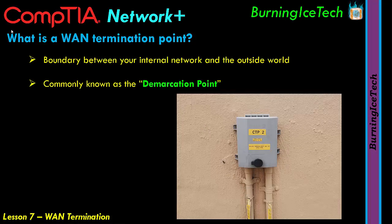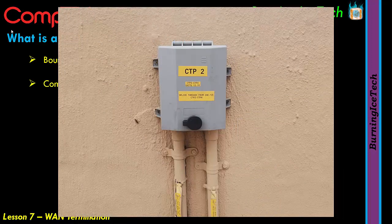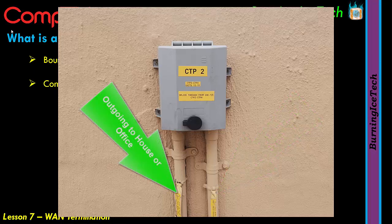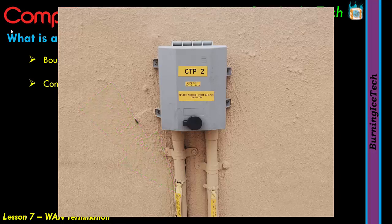Here is a photo of my own WAN termination box outside my house. There are two PVC pipes coming out below the box. The pipe on the right has a fiber line in it — you can't see it because it's inside the pipe. The pipe on the left is usually empty, until you decide to get fiber installed. When that time comes, the fiber company will come out, open the box, splice some fiber cable in there, and blow it down that pipe with compressed air to wherever it needs to go.